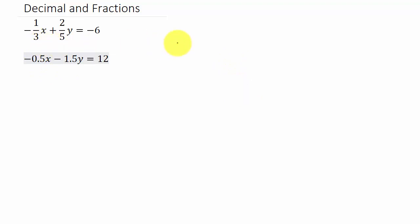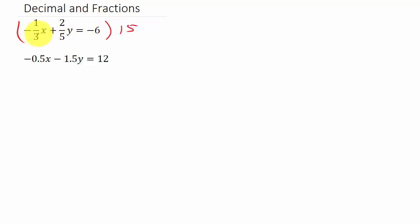If we look at the first equation, we can see in the denominators we have a 3 and a 5. So if we find a common denominator, that's 15. I'm going to multiply this first equation by 15. Remember, if you have an equation, you can multiply each term by a number — we're just multiplying each term by the common denominator.